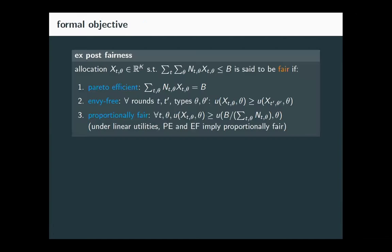We're going to take an axiomatic approach to defining fairness and use a very standard notion of fairness from the offline setting. This is ex post fairness — meaning at the end of the day I can look back at the sequence of people who arrived and ask what I would have desired in a fair allocation. There are three desiderata we might want.